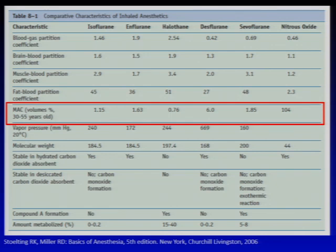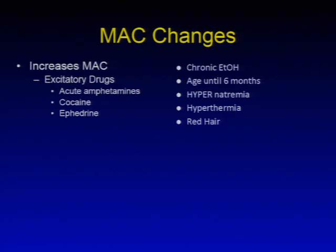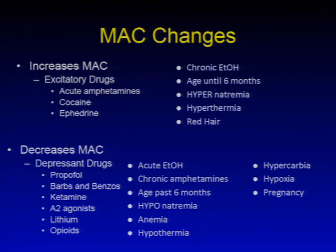MAC doesn't really tell us how agents come on or off — we'll talk about that in a second. Lots of things can affect MAC, and unfortunately there's no good way of learning these other than memorizing them. There are things that can cause an increased MAC, meaning you have to increase the medication to get 50% of folks immobile, and there are also things that can decrease MAC. Try to see if you can find some patterns within the list.